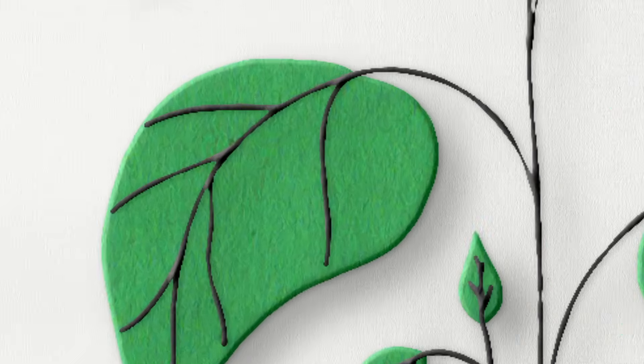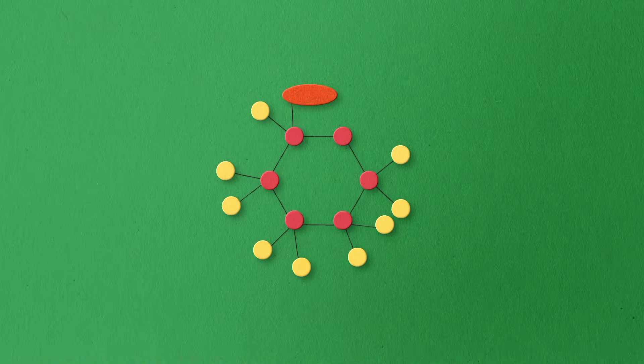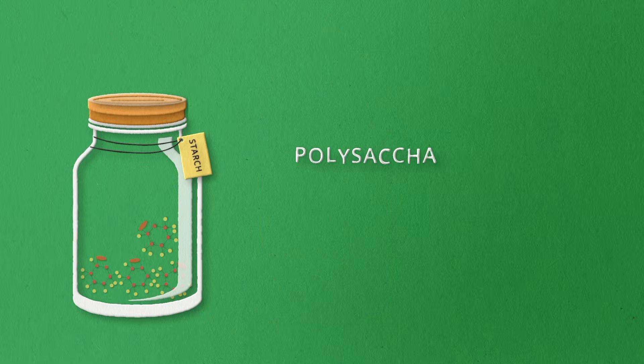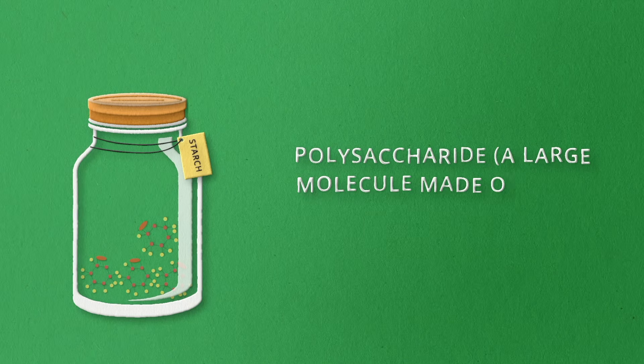For example, plants use photosynthesis to create simple carbohydrates, or sugars, and then store them as starch. Starch is a polysaccharide, which is a large molecule made of many smaller monosaccharides.